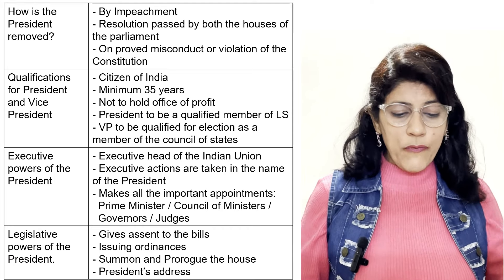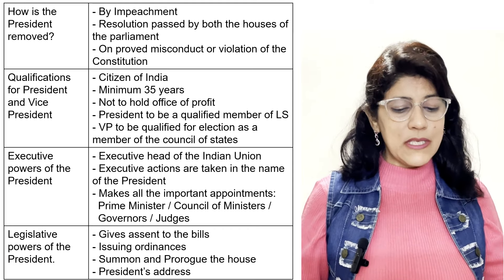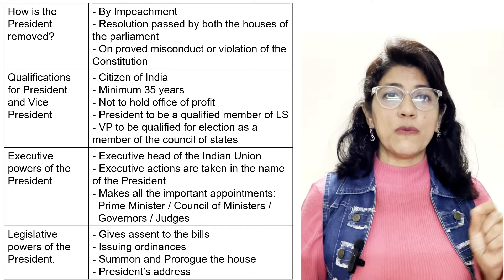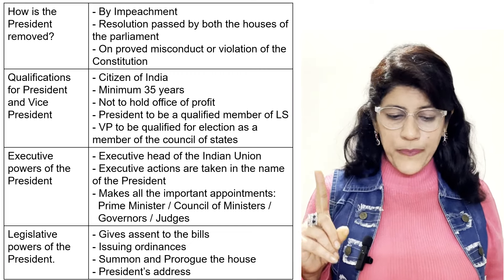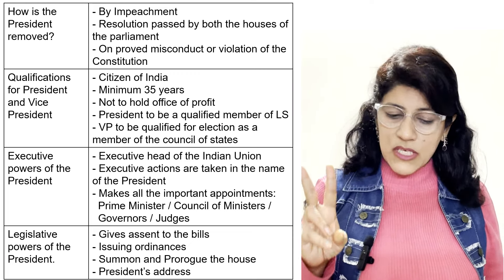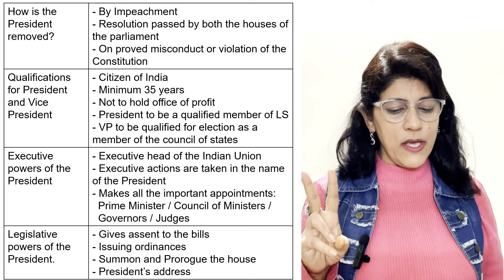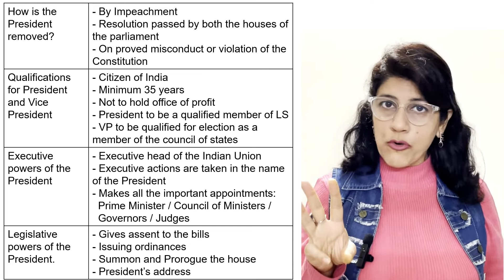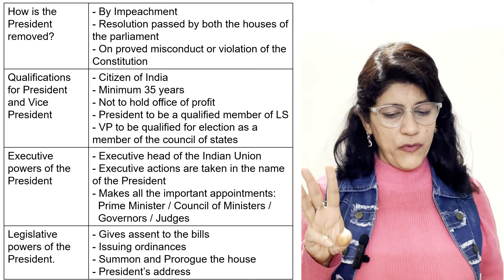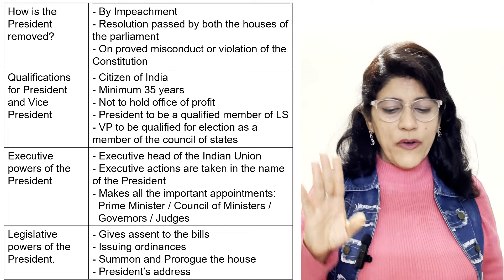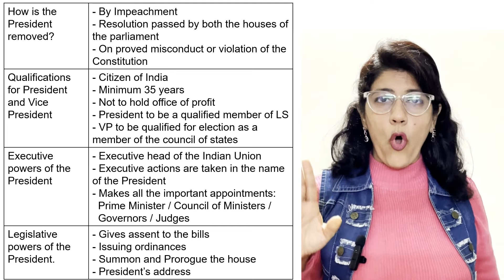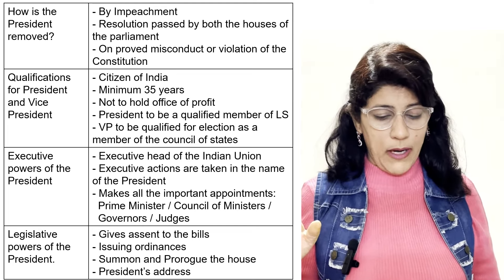Qualifications for President and Vice President: citizen of India, minimum 35 years of age, not to hold office of profit. President must be a qualified member of Lok Sabha. For Vice President, the qualification is to be eligible for election as a member of the Council of States.